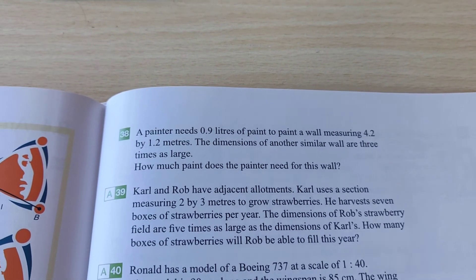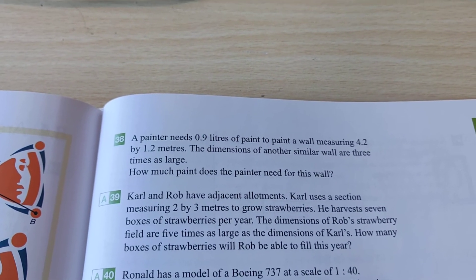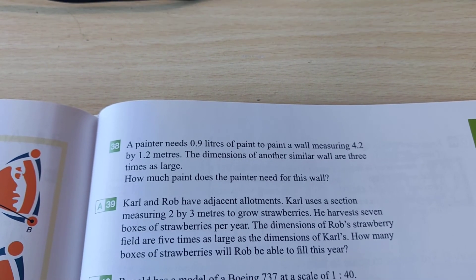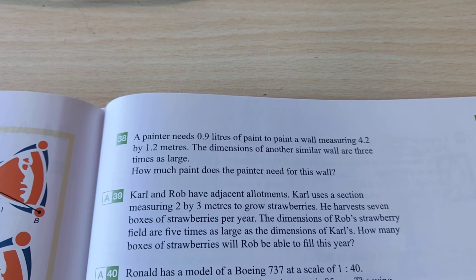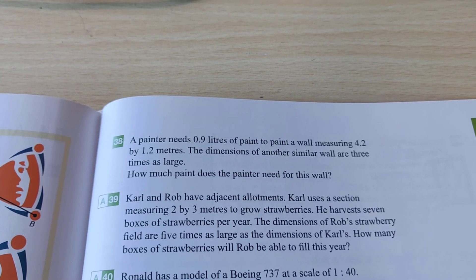A painter needs 0.9 liters of paint to paint a wall measuring 4.2 by 1.2 meters. The dimensions of a similar wall are three times as large. How much paint does the painter need?